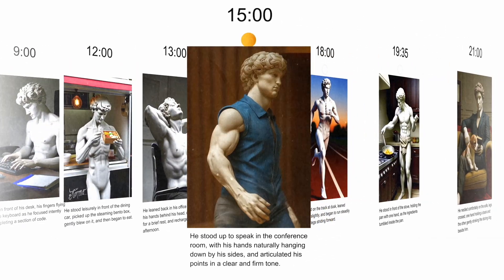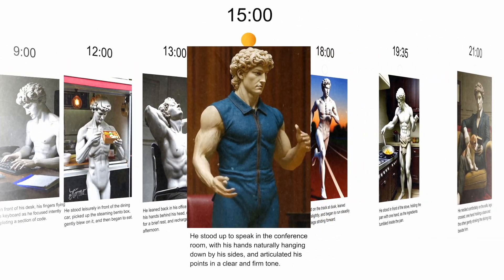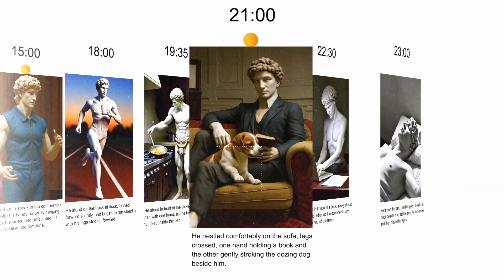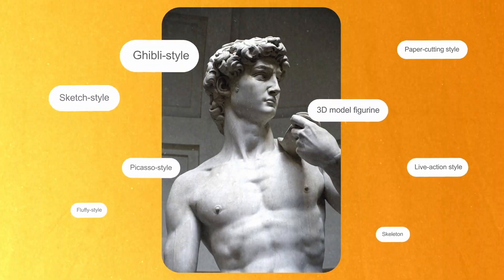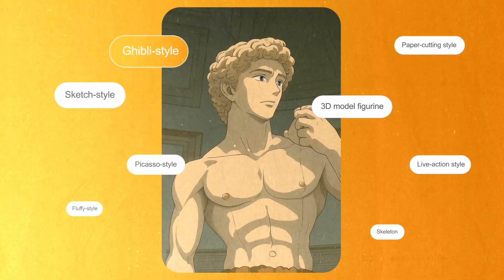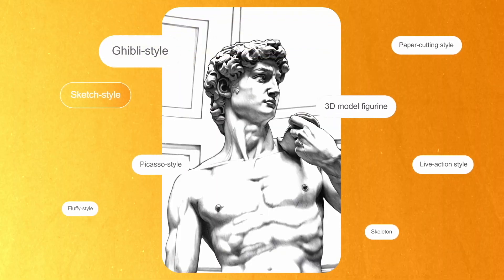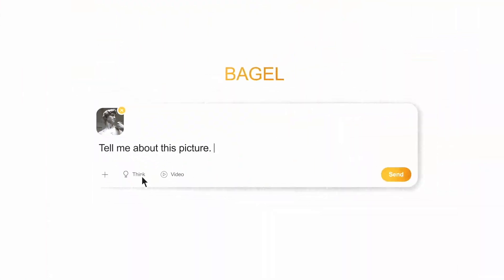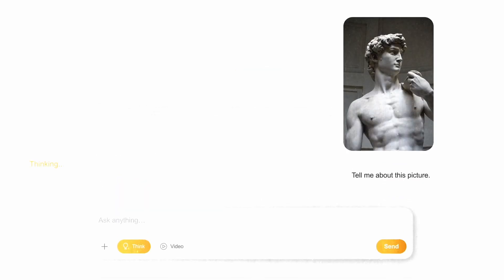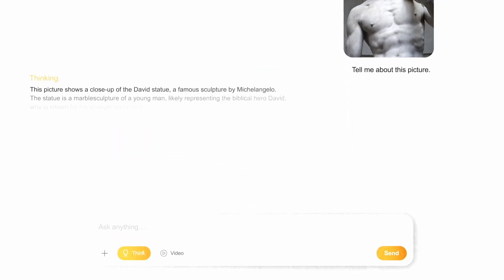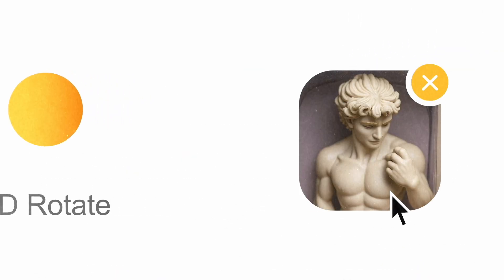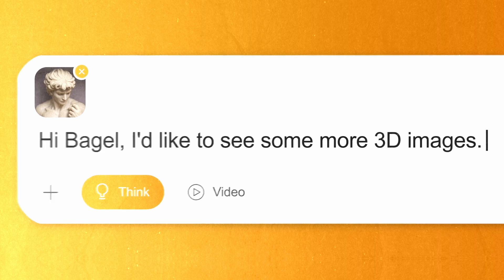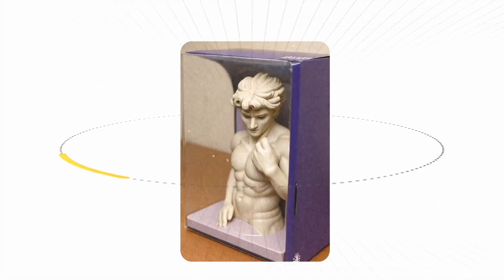There's a new open source multimodal image generator on the scene. It's called Bagel, and it's made by ByteDance. Bagel isn't just another text-to-image tool — it's a true multimodal model, meaning it can understand, generate and edit images, hold conversations about images, and handle detailed visual reasoning, all in the same conversational flow.